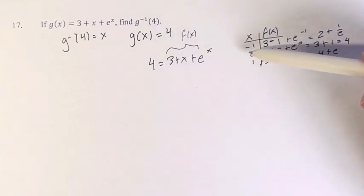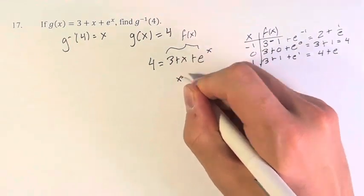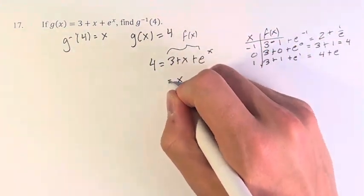So, we can see that when x is equal to 0, this function, 3 plus x plus e to the x, is equal to 4. Therefore, to solve this equation, x equals 0.